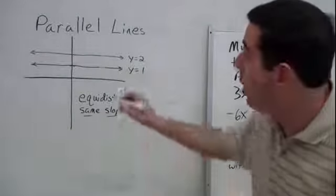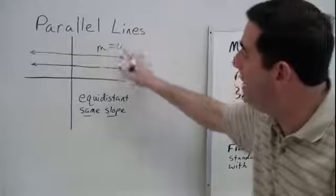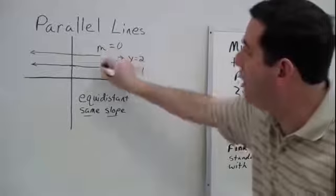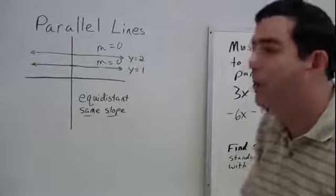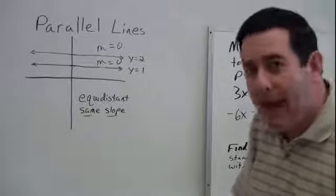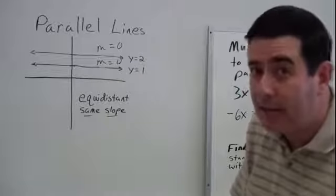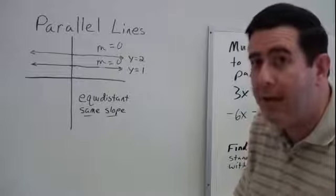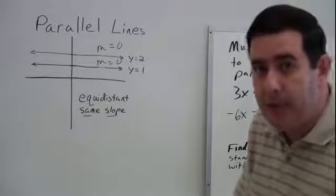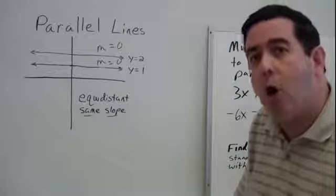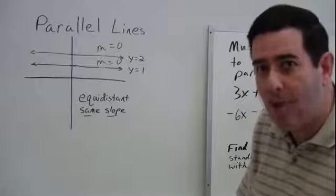With horizontal lines, they always have zero for their slope. So for these two lines, they have a slope of zero, they have the same slope, and they are parallel. To decide if two lines are parallel, we need to know: are their slopes the same or not?